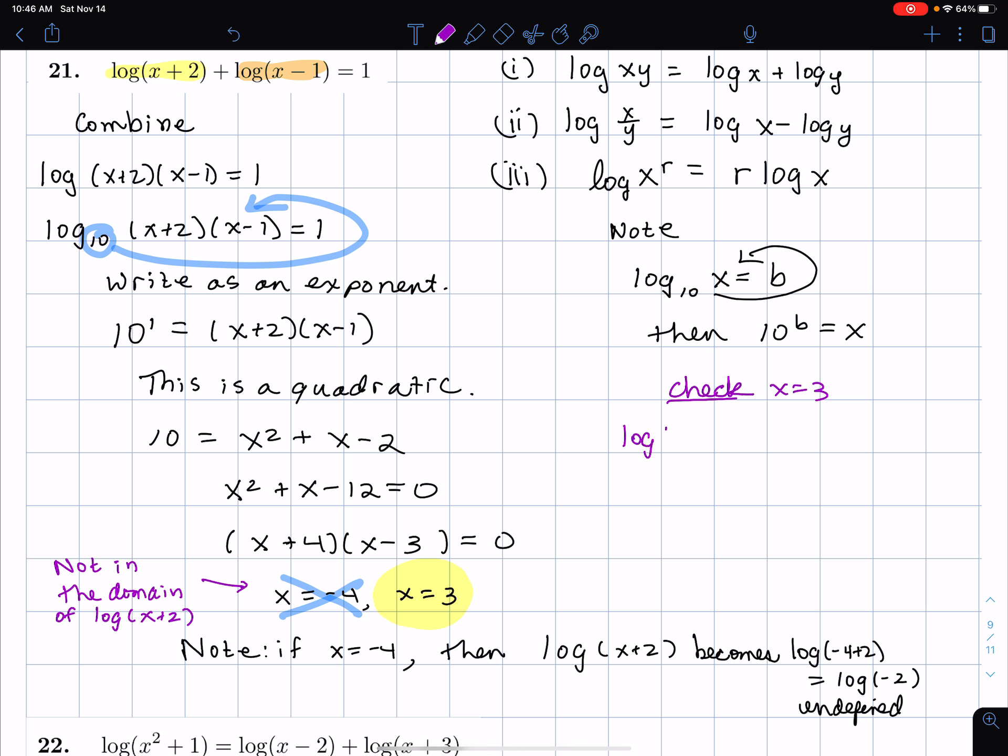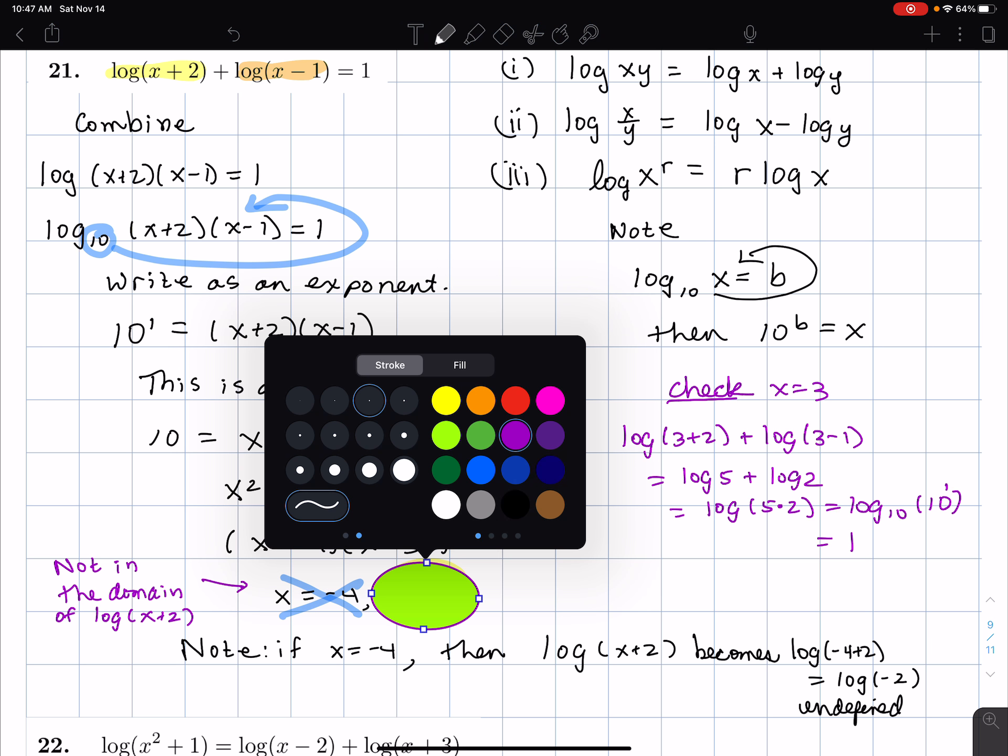If I have log of (3+2) plus log of (3-1), this is log 5 plus log 2. I'll use that property 1, which combines these. This is log of 5 times 2, which is log 10. And when you have the same base, log 10 of the number 10, you get 1. You can think this is 10 to the 1 power, log and exponential cancel out. But that's the check. 3 is the number.